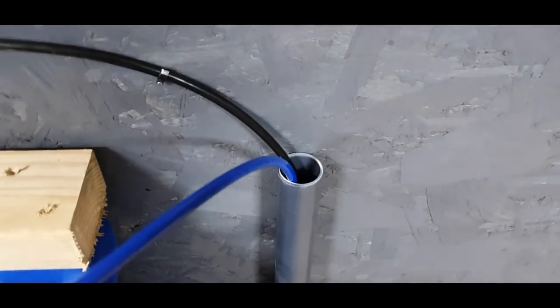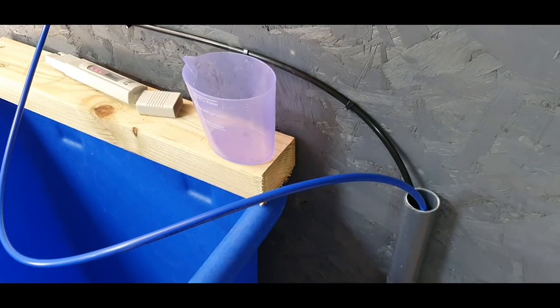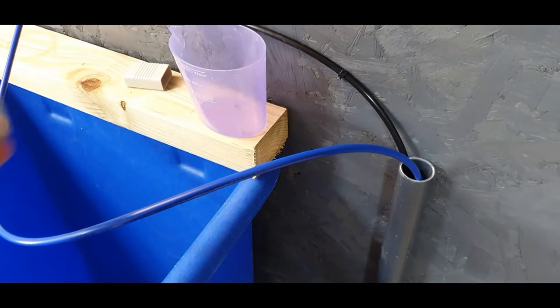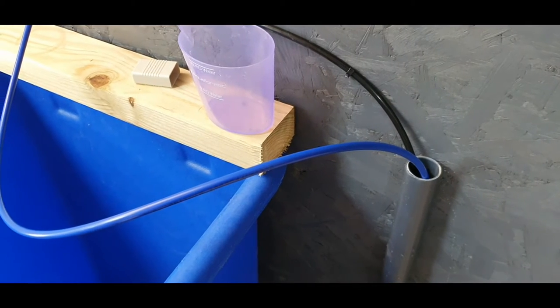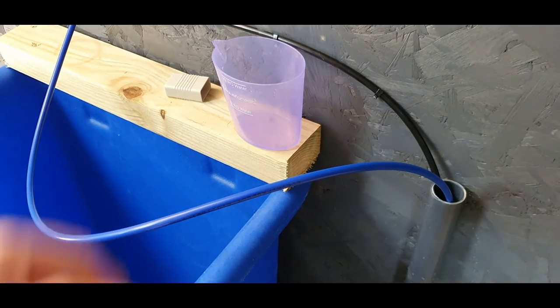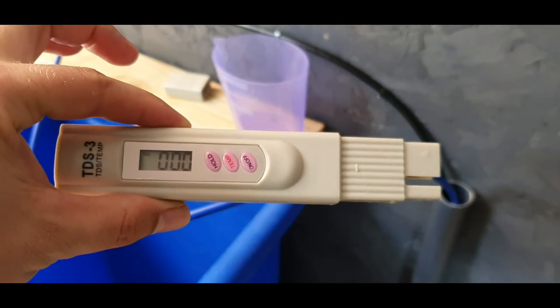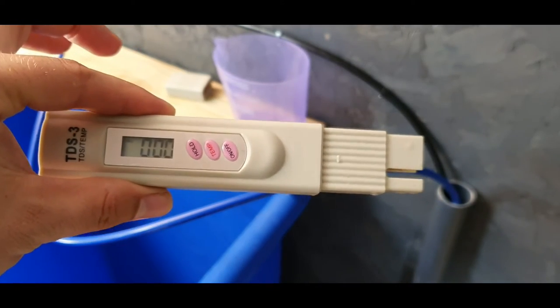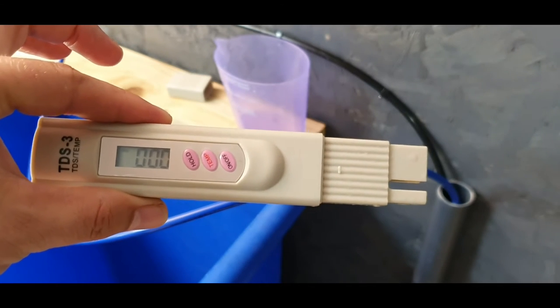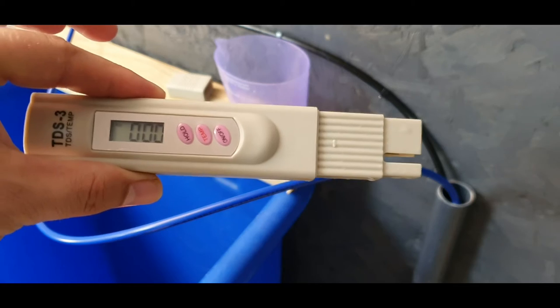As they say, the proof of the pudding is in the eating. What we're going to do now is actually test what the TDS reading is on the water that's coming out of this RO unit, because that's the important factor. We're going to be using one of these TDS meters, a very accurate device. This will give us a pretty good reading as to how much rubbish this RO unit is removing from my system.